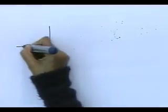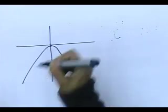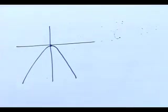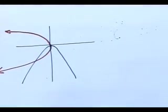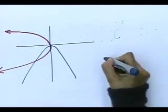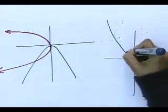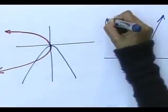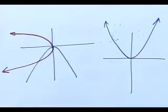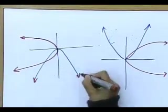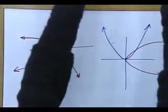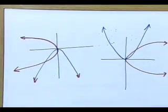Look at this. If you have a sad face, your inverse is going to flip in this direction. That is if you have a sad face. If you have a happy face — there's my happy face — then your inverse is going to slope in that direction. Sad face, inverse goes that way. Happy face, the inverse goes this way.